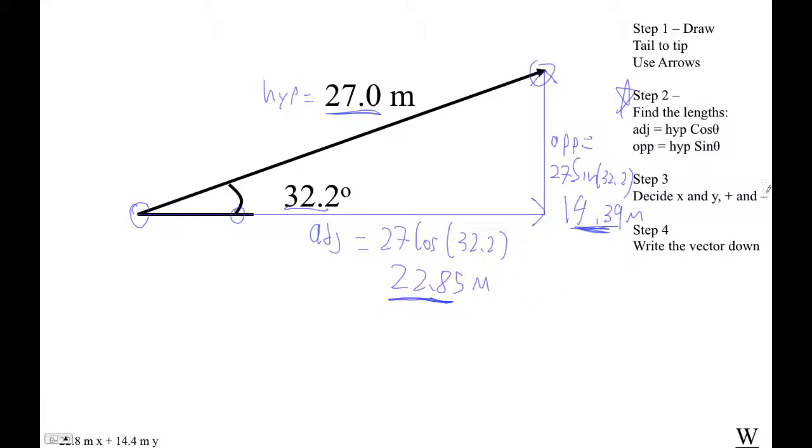Now I have to decide x and y plus and minus. This guy, since it goes to the right, it goes left and right as x. Since it's going to the right instead of left, in other words, this vector goes more to the right than it does. It definitely doesn't go that way. It's positive. This guy who goes up and down is definitely our y component. And since it goes up, it's positive.